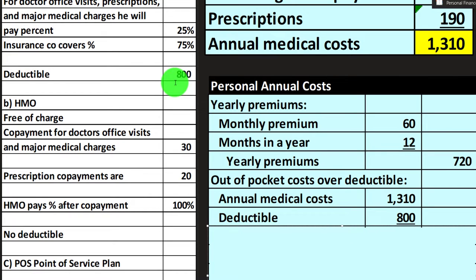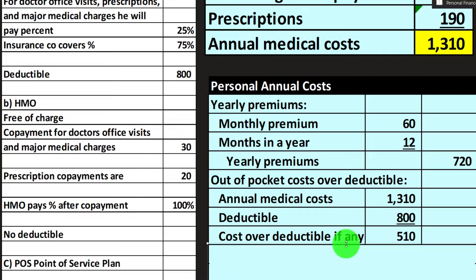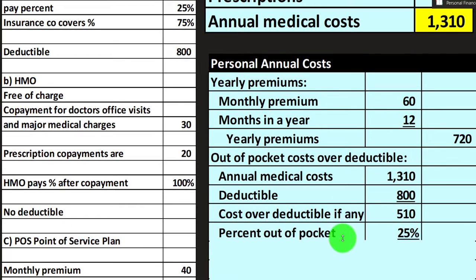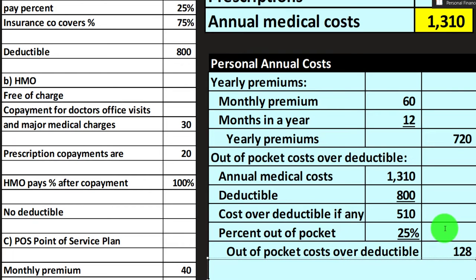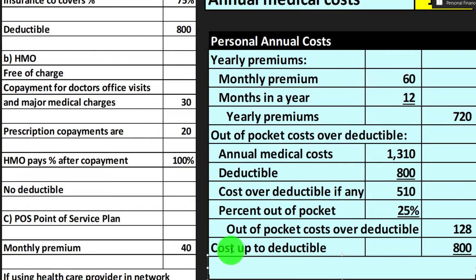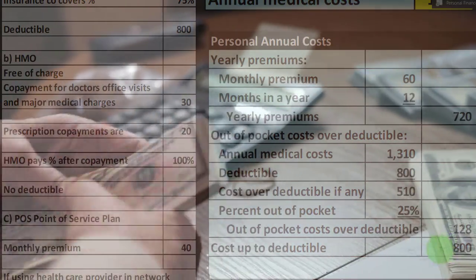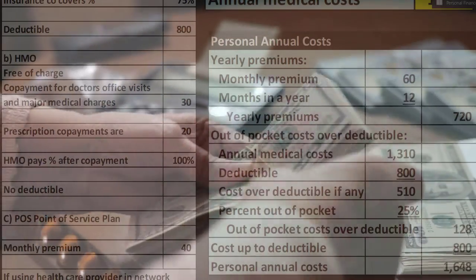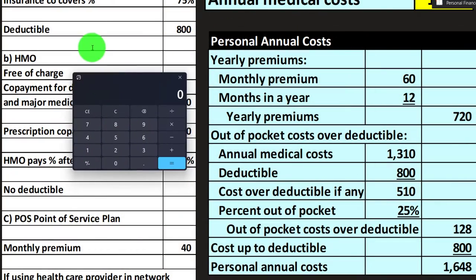The cost over the deductible is $1,310 minus $800, which equals $510. The out-of-pocket percentage is 25%, so 25% of $510 gives us $128 in out-of-pocket costs over the deductible. Then we add the deductible itself at $800. So the total for Plan A is: $720 in premiums plus $128 out-of-pocket over the deductible plus $800 deductible equals $1,648.